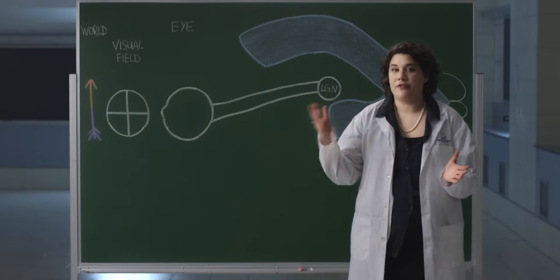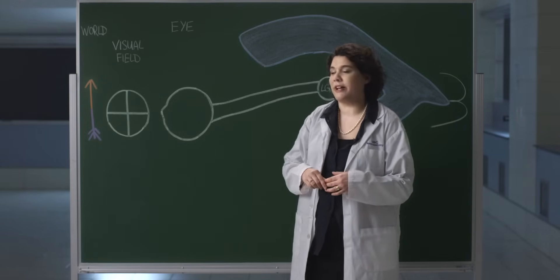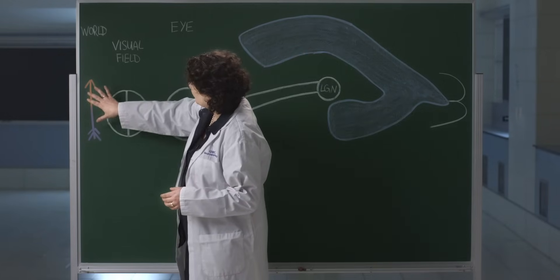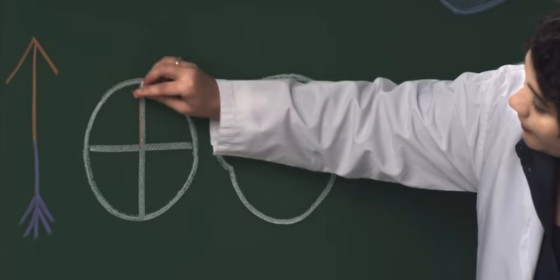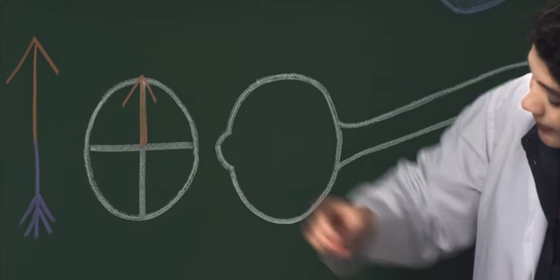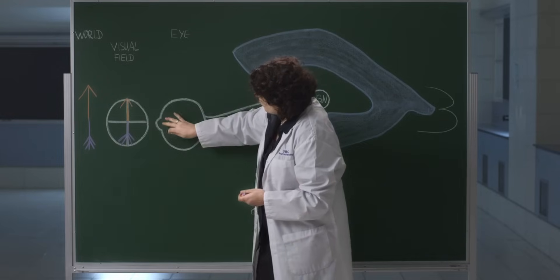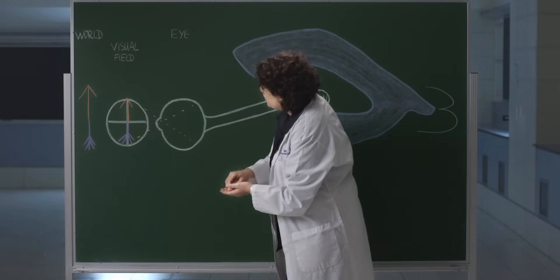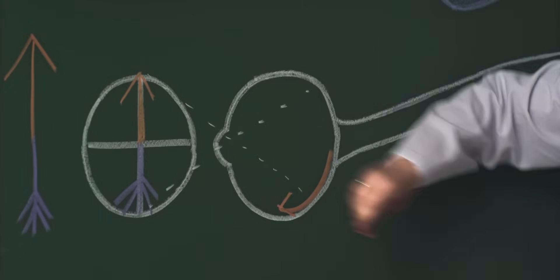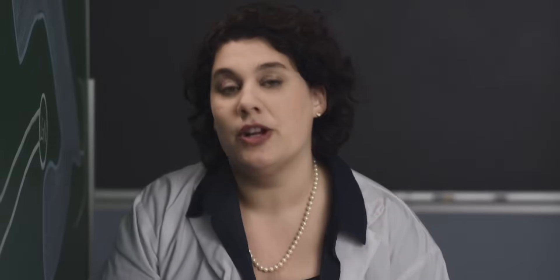Now that we've sorted out how the left and right visual fields project to their respective cortical areas, let's have a look at how the upper and lower visual field project to the cortex. Again, the world around us is represented by this arrow. This is the visual field of this particular eye, and we can see that arrow in the visual field. This is the upper visual field, and this is the lower visual field. Due to the refraction at the cornea, the image as it projects onto the retina will be inverted.